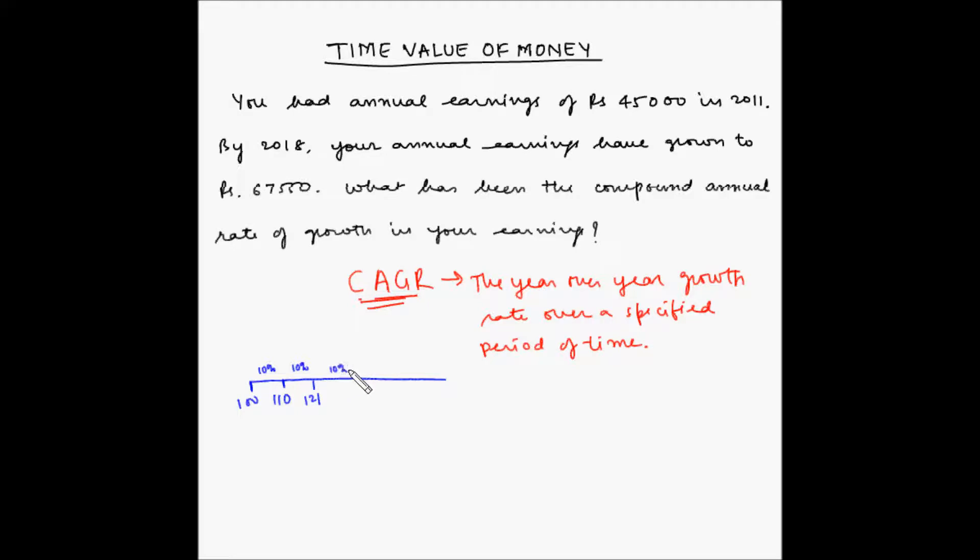Again, at 10%, your new investment amount becomes Rs 133.1. So as you can see, this 10% is being calculated on the total amount, including the growth experienced in the previous year. So this 10% is the compound annual growth rate.